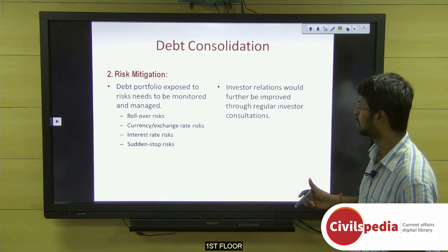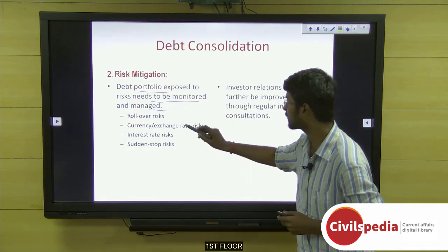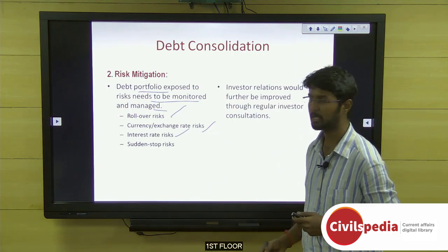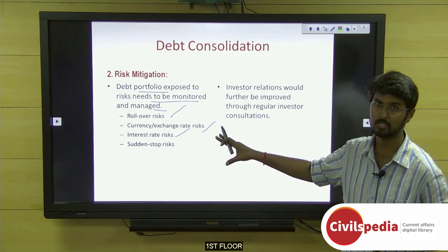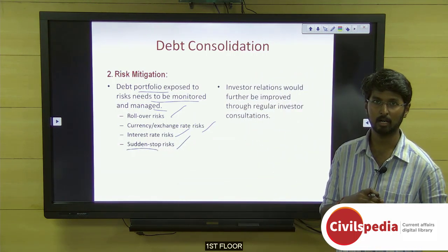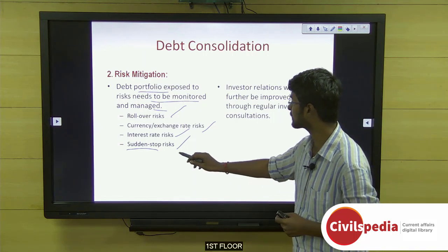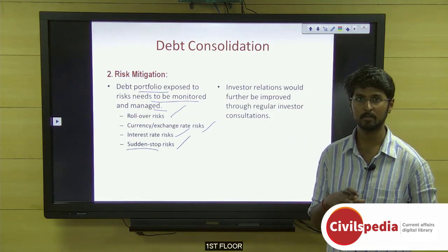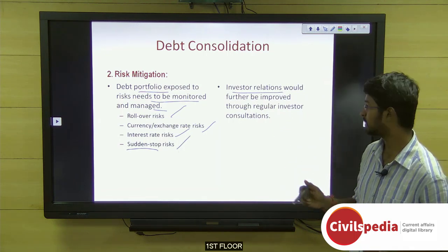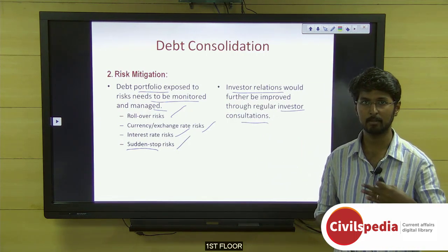On risk mitigation, the debt portfolio exposed to risk needs to be monitored and managed. Risks include rollover risk, currency/exchange rate risk, interest rate risk (very low at 1.8% floating for India), and sudden stop risk — a sudden stoppage in investor demand for government borrowings. To manage this, the government will improve investor relations through regular consultations and meetings to understand investor expectations.